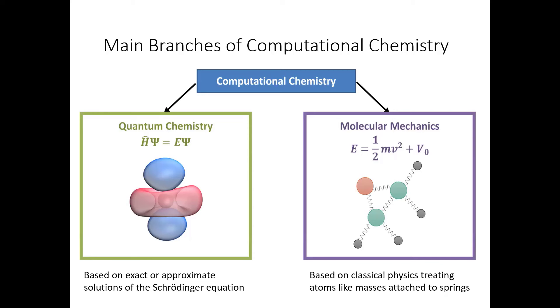We can kind of split computational chemistry into two main areas. One of those is quantum chemistry methods, where we're solving the Schrödinger equation, and I'll talk more about the Schrödinger equation in just a second. The other broad area of computational chemistry is based on classical physics, or classical mechanics, and is generally known as molecular mechanics. In this area of computational chemistry, we treat the atoms just as classical masses, and they're attached to springs.